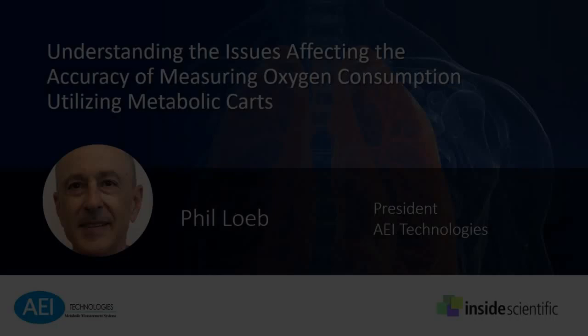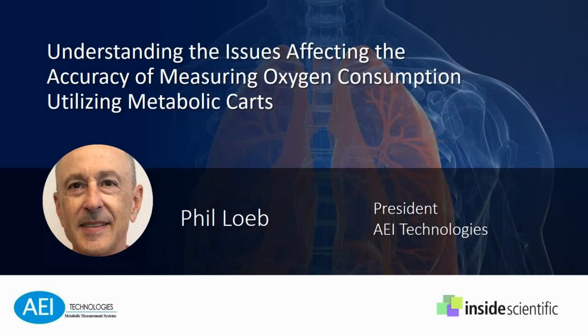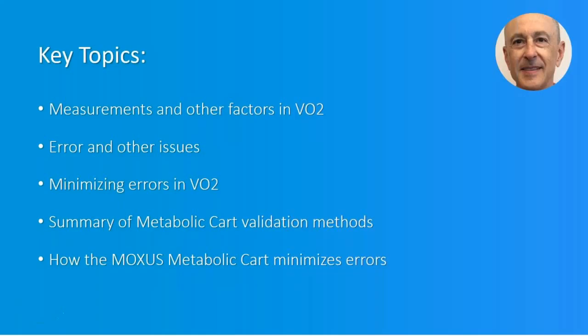We are going to discuss the measurements and other factors in VO2 determination. Note that we will use VO2 and oxygen consumption interchangeably in this presentation. We are also discussing errors and other issues in determining VO2 and how to minimize those errors, then summarize metabolic cart validation methods, and finally explain how the Moxis metabolic cart minimizes errors.